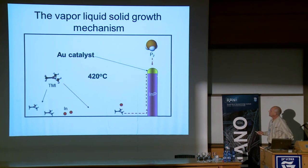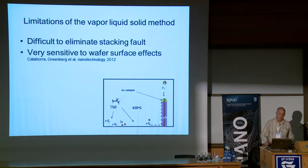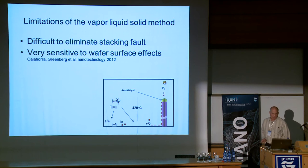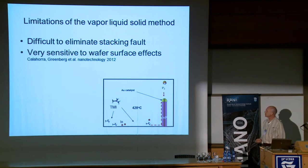This is the conventional VLS method. There is a gold catalyst deposited on the substrate - a very strange crystal growth method. The precursors hit the substrate, crawl along the substrate, then climb upon the nanowire, get into the gold particle, and come out. This method, the conventional VLS method, has some limitations. We found it very difficult to eliminate the stacking faults using this method, and it's extremely sensitive to the wafer surface and the growth rate - it depends a lot on what's going on because of the diffusion along the surface.